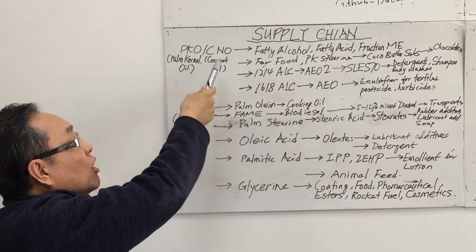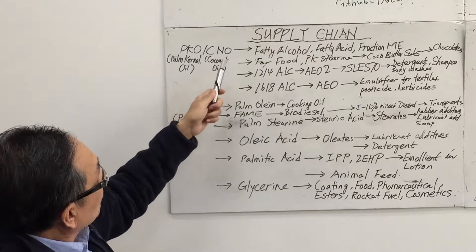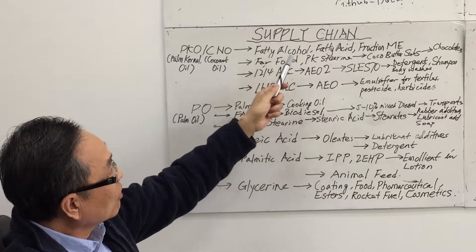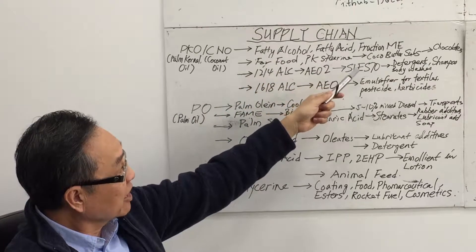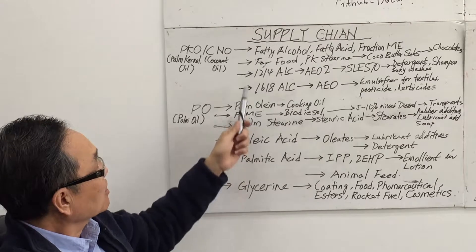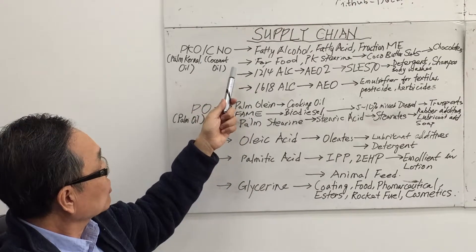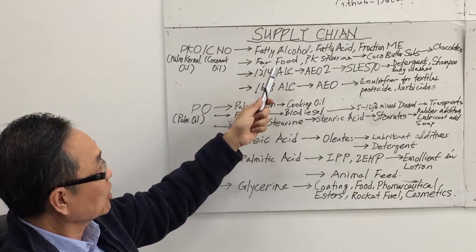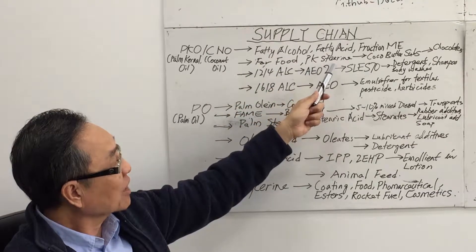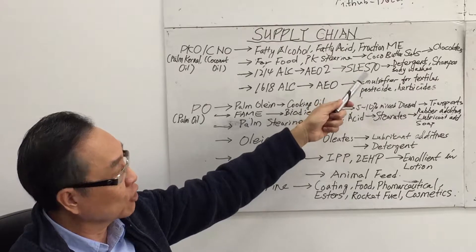For palm kernel oil and coconut oil, they are used for making fatty alcohol, fatty acid, and fractionated methyl ester. 80% of the palm kernel oil is used for food applications, and the palm kernel stearine, for example, is used as a cocoa butter substitute for chocolates.